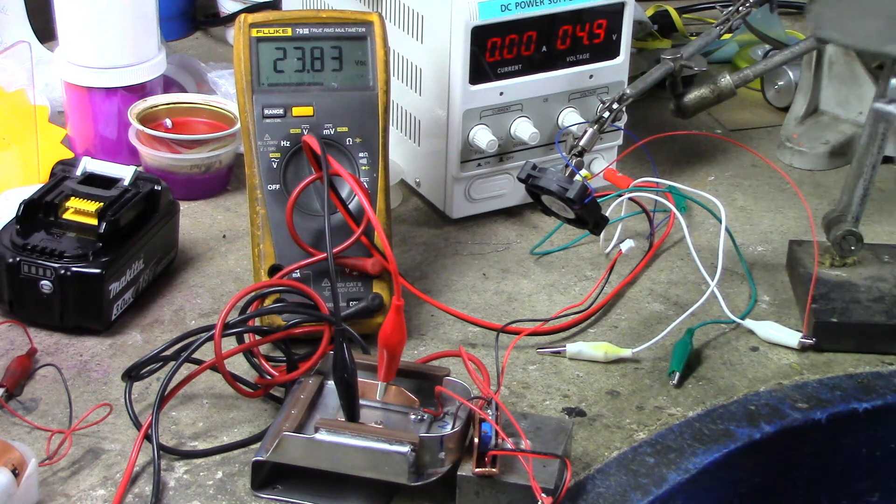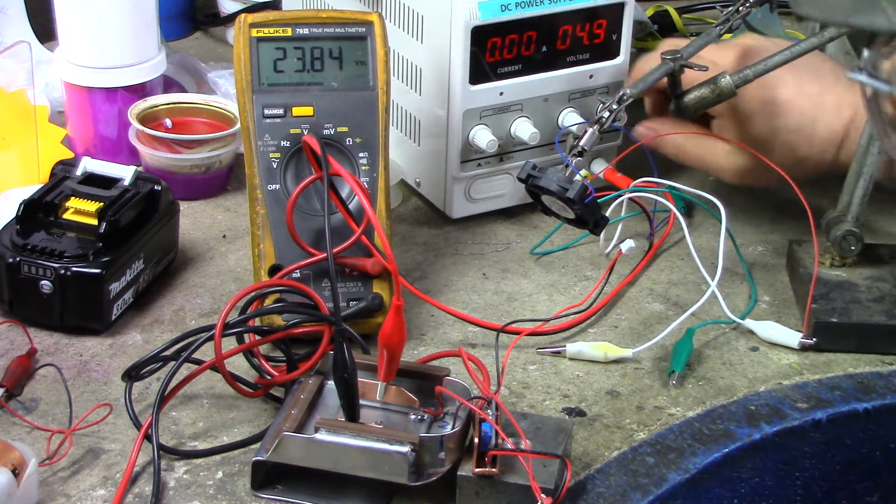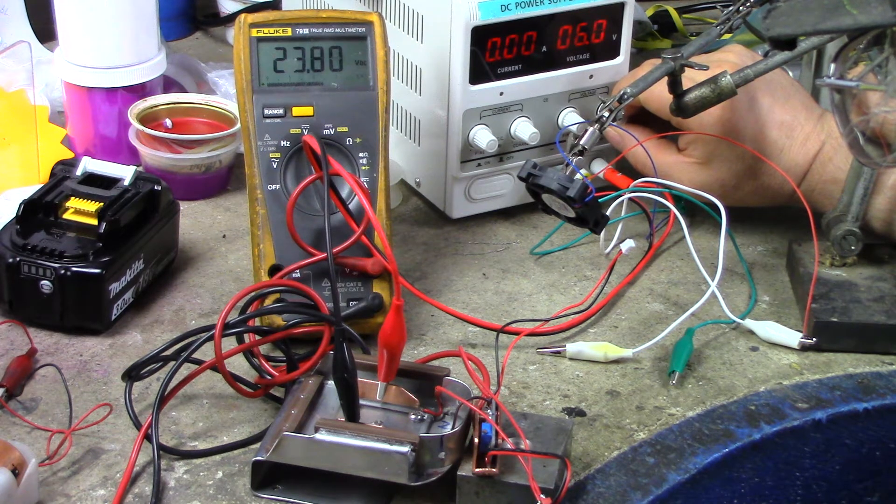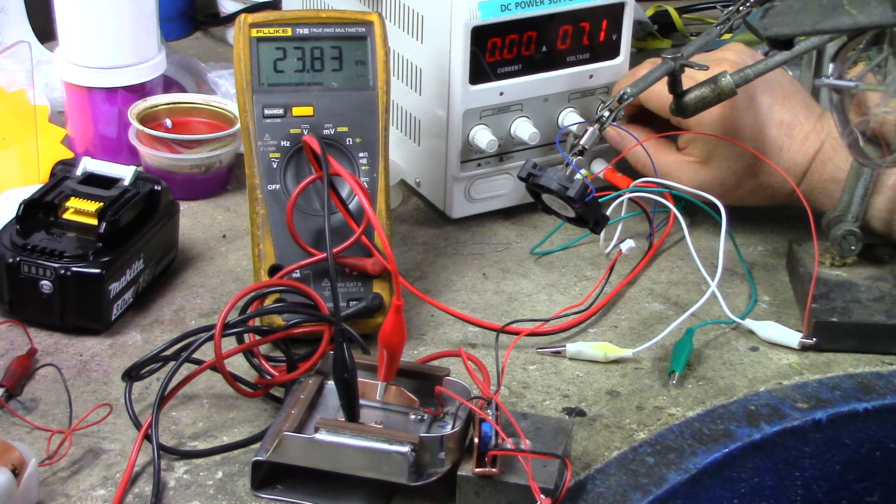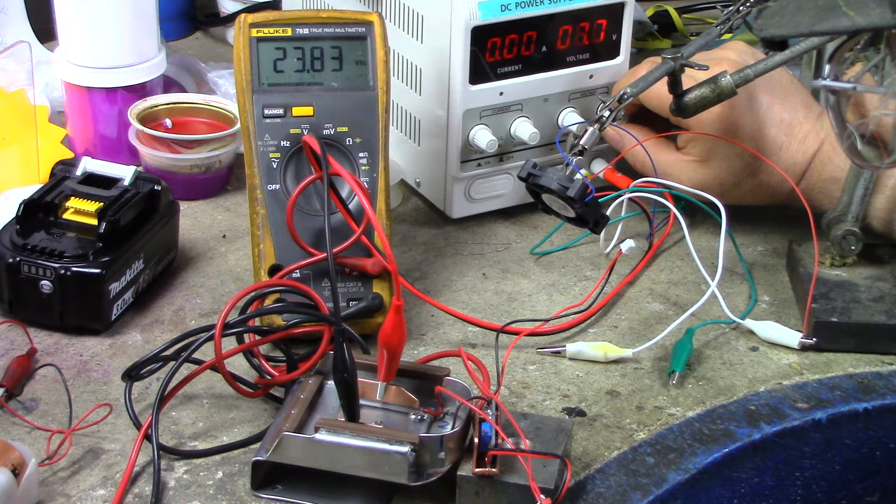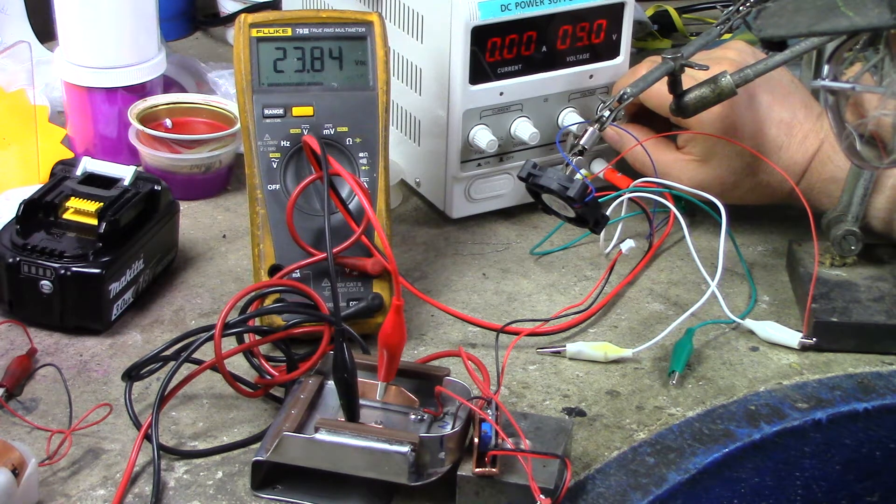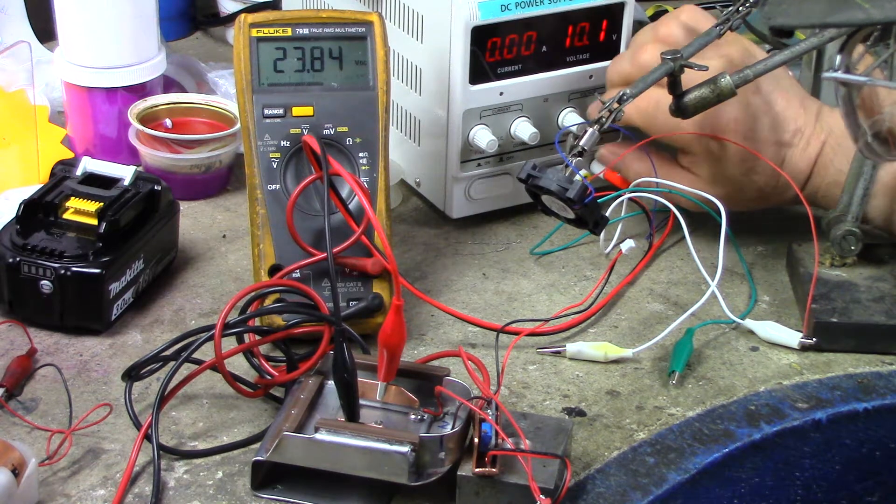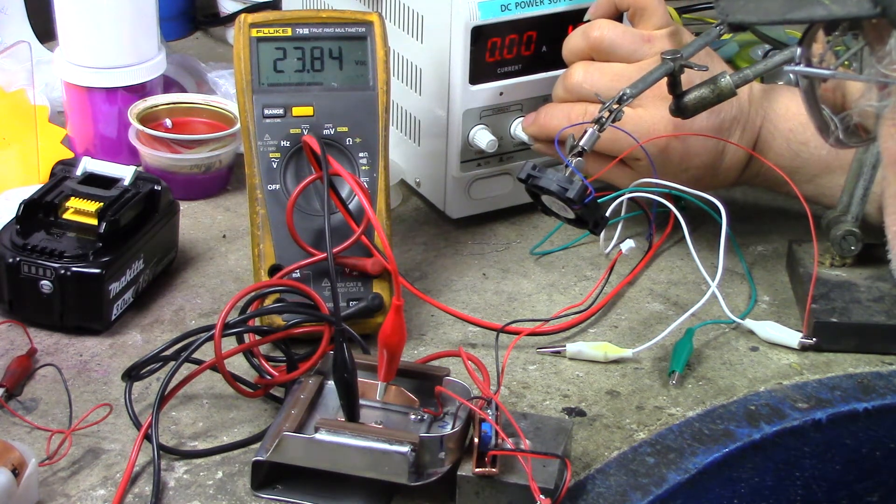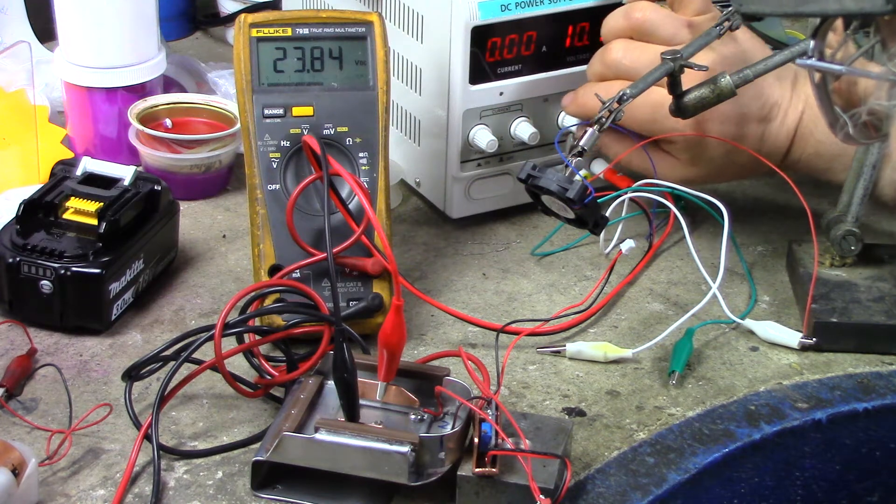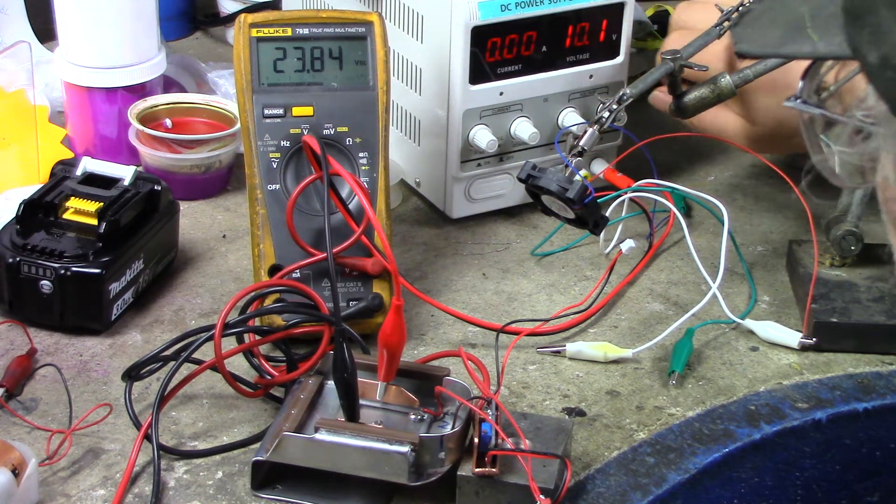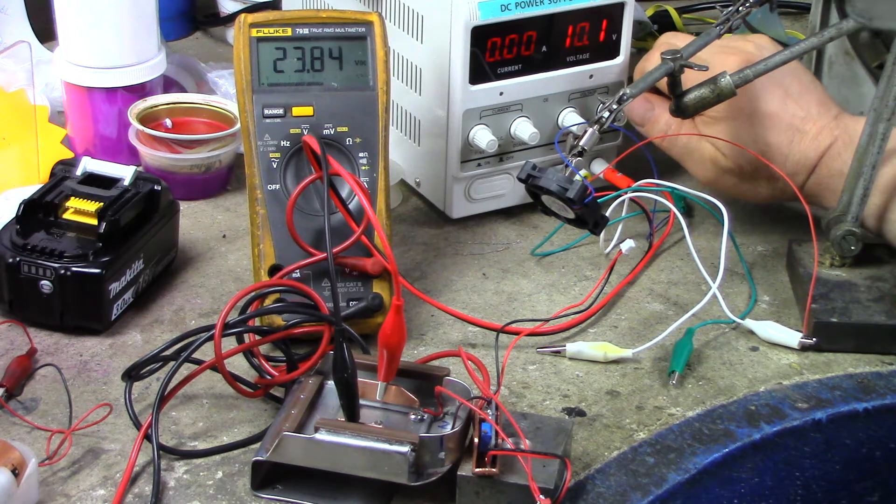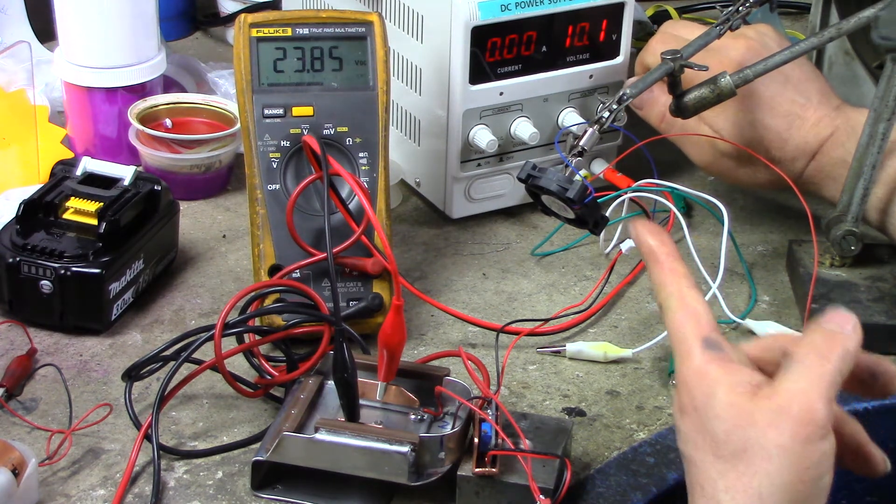It's currently set at 4.9 volts and I'm going to use this to gradually turn it up to the 19 and a half that comes out of those batteries. Okay, see that went down a bit. Now I'm going to slowly crank up the voltage. I'll just make sure my current isn't at zero.